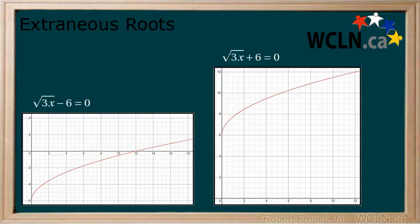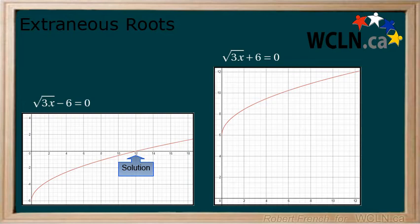Now consider the graphs of these two functions. Because both equations are equal to 0 on one side, the solutions will be where the function on the left intersects the x-axis. With the first equation, we see there is a solution or root at x equals 12, where the function intersects the x-axis. With the second equation, the function does not intersect the x-axis and therefore has no solution. This lines up with our algebraic work which shows no solution.